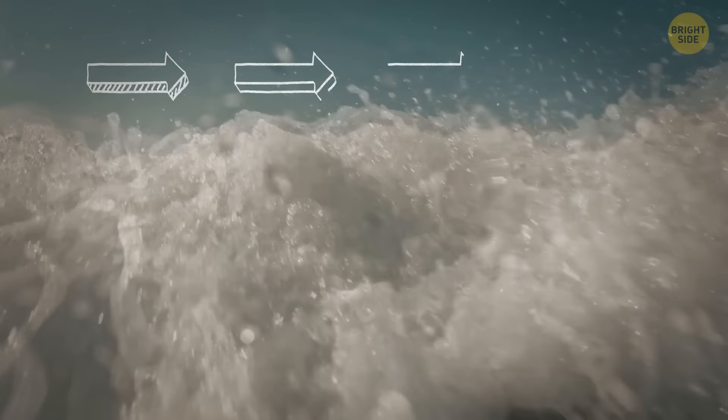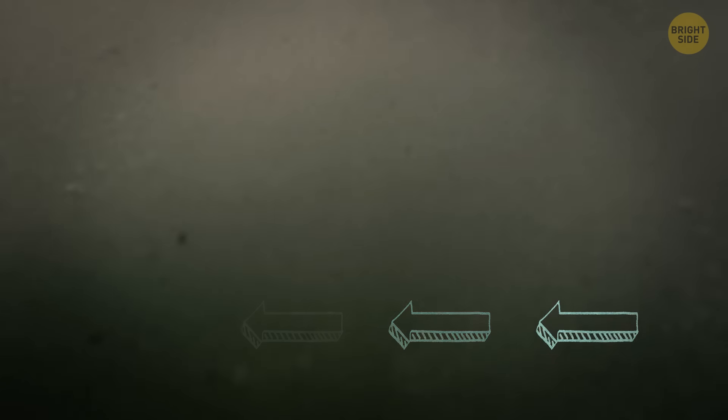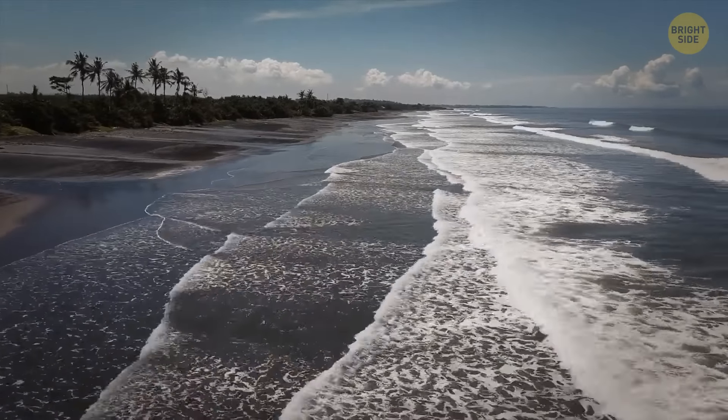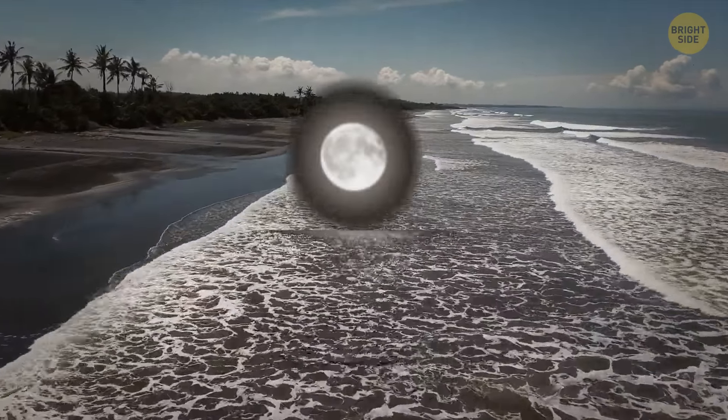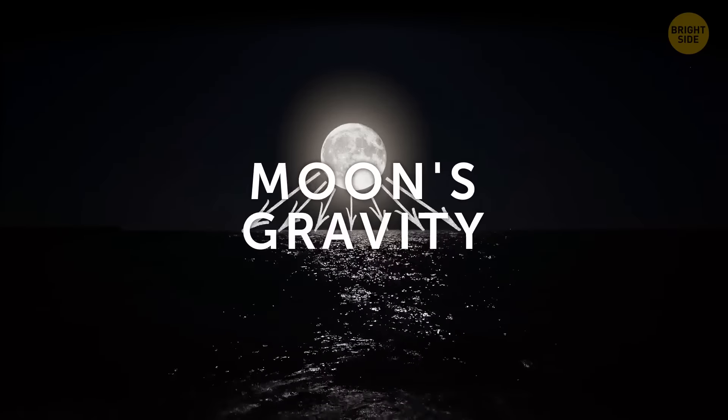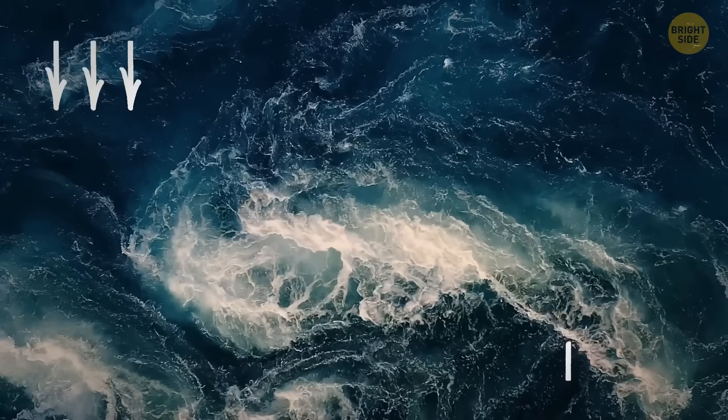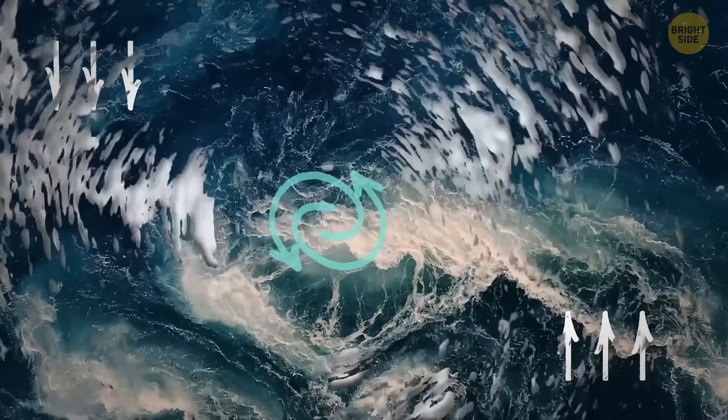A strong wind can only create one current. The difference in water temperature and its density can make another. Also, the current can be caused by tides. This is when the moon's gravity affects the water. So when two currents flowing in different directions meet, they form a vortex.